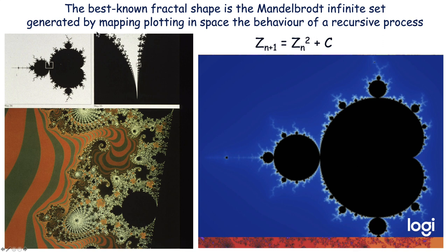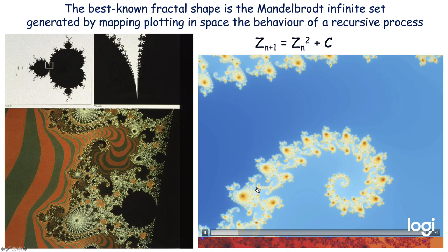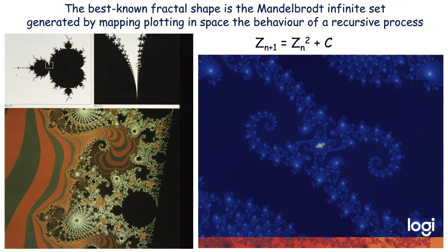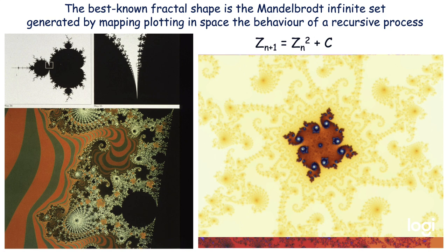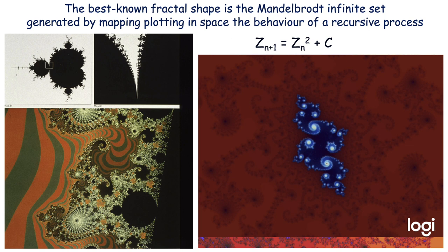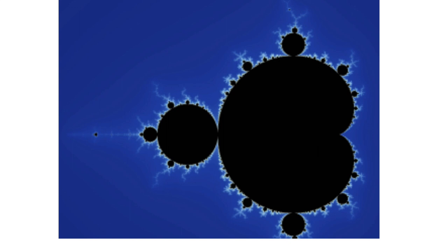The best known fractal shape is the Mandelbrot infinite set, generated by plotting in space the behaviour of a recursive process described by a simple equation: z_(n+1) = z_n² + c, where c is a variable. You can see the fractal, and as I show you the appearance of this incredible fractal by increasing the magnification going to infinity, it repeats itself at different scales. You can see the enormous richness of this wonderful geometrical structure. It's just an amazing mathematical formulation of the modern geometry of fractals.